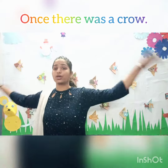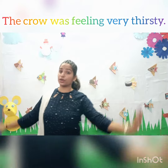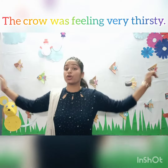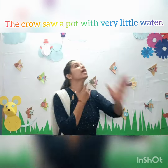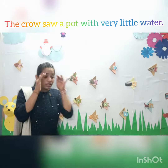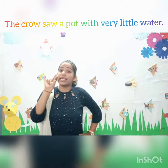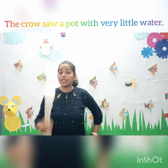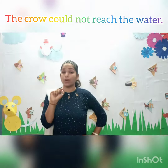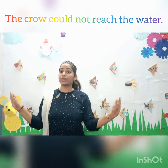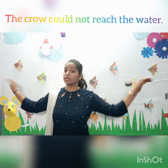Once there was a crow. The crow was feeling very thirsty. The crow was feeling very thirsty. The crow saw a pot with very little water. The crow saw a pot with very little water. The crow could not reach the water. The crow could not reach the water.